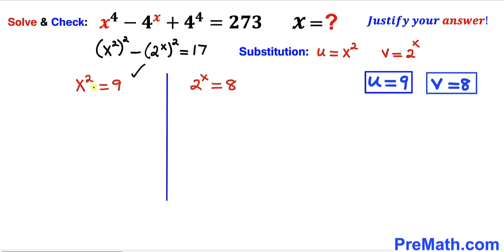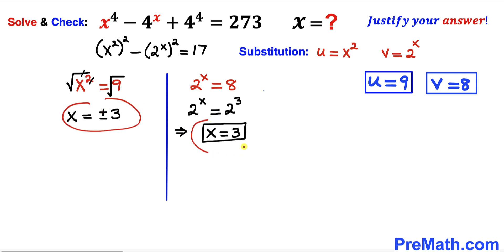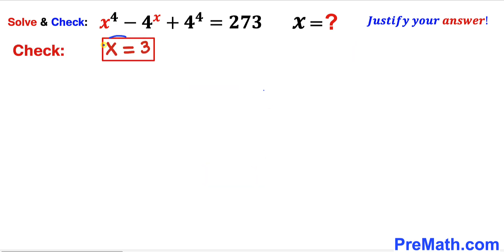Focusing on x squared equals 9, we take a square root on both sides, so x equals positive or negative 3. For the next equation, 8 can be written as 2 power 3, so 2 power x equals 2 power 3. Since the bases are the same, we equate the exponents, giving x equals 3. From both equations we conclude that x must be positive 3, so our solution is x equals 3.